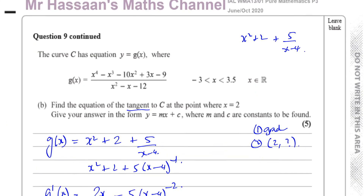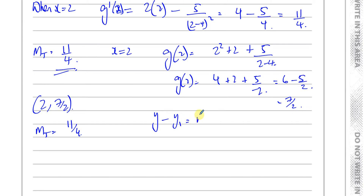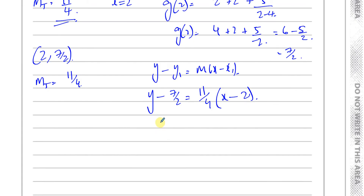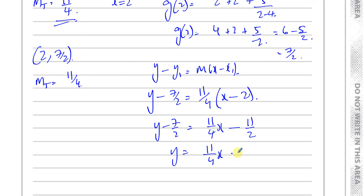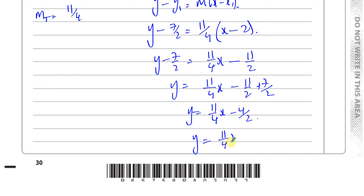So we know that the point is (2, 7/2) and the gradient of the tangent is 11 over 4. We have to find the equation in the form y equals mx plus c. So we've got y minus 7 over 2 equals 11 over 4 times x minus 2. So y equals 11 over 4 times x minus 11 over 2 plus 7 over 2, which gives y equals 11 over 4 x minus 2. There's the answer to that part of the question.